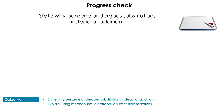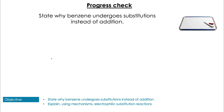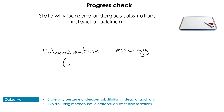First question: state why benzene undergoes substitution instead of addition reactions. If you described anything about the delocalization energy or the extra stability of the structure of benzene, then you would have got the correct answer.